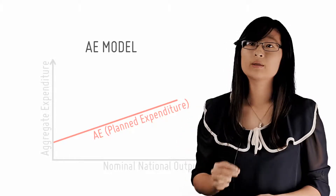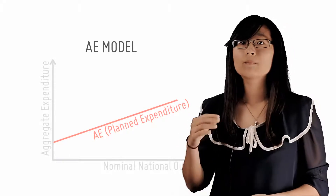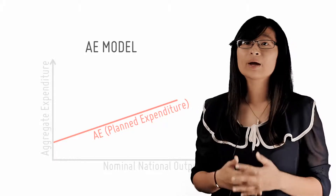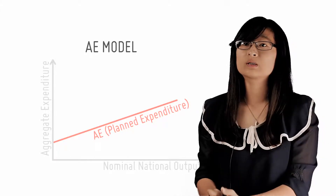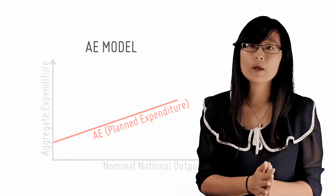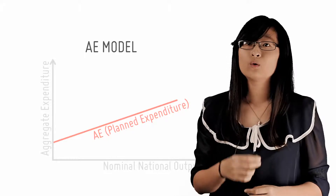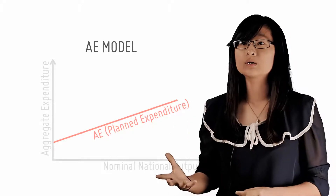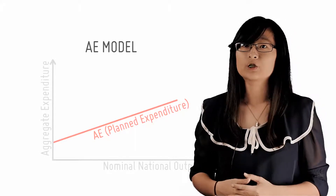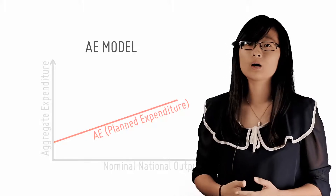We've explained in the previous checkpoint that the equilibrium level of national income occurs when planned expenditures equal actual expenditures. Firms correctly anticipate how much goods and services are demanded in this situation, and they produce only up to the point where they are demanded, so there are no unplanned increases or decreases in their spare stocks and inventories. Firms don't need to decrease production in the next time period, for example, to get rid of excess accumulated stock.